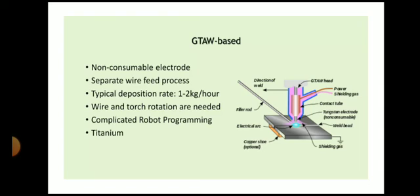The GTAW process uses a non-consumable electrode — tungsten electrode. In GMAW we use a consumable electrode, whereas in GTAW the electrode is non-consumable tungsten, and hence additional filler material is required. The arc is generated between the tungsten electrode and the workpiece, and additionally we have to supply the filler material to deposit the material — this is a separate wire feed process. Its deposition rate is less compared to GMAW: 1 to 2 kg per hour. Wire and torch rotation are needed, so we have to control two parameters — the electrode as well as wire feed — making it a somewhat complicated process. It is beneficial for depositing titanium.